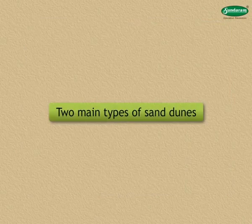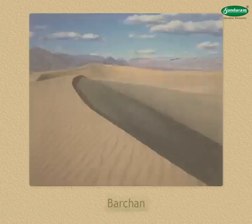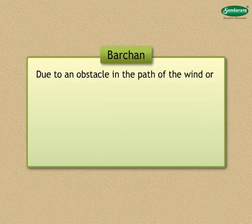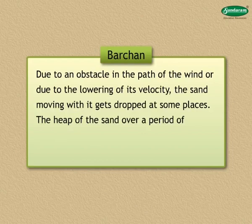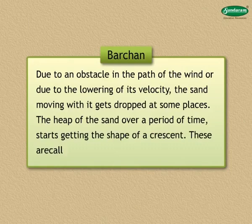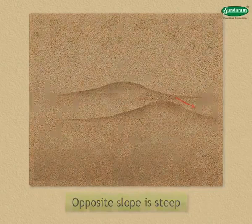Two main types of sand dunes are identified on the basis of their shape: Barchan and Seif. Barchan: due to an obstacle in the path of the wind or due to lowering of its velocity, the sand moving with it gets dropped at some places. The heap of sand over a period of time starts getting the shape of a crescent. These are called barchans. The barchan slope that faces the wind is gentle, whereas the opposite slope is steep. Such hills can be seen in large numbers in the Great Indian Desert in Rajasthan.